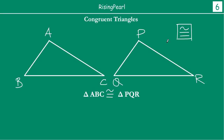So if we say triangle ABC is congruent to triangle PQR, this means triangle ABC and triangle PQR will exactly cover each other, and P corresponds to A, Q corresponds to B, and C corresponds to R. That is what is meant by congruent triangles.